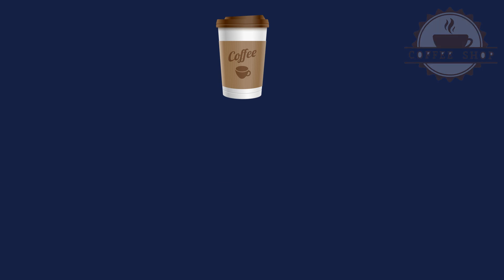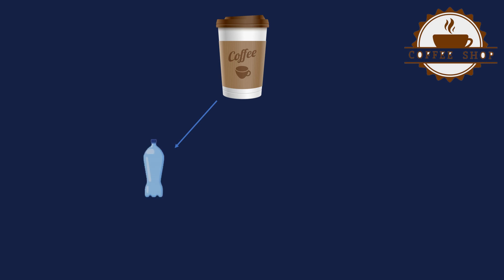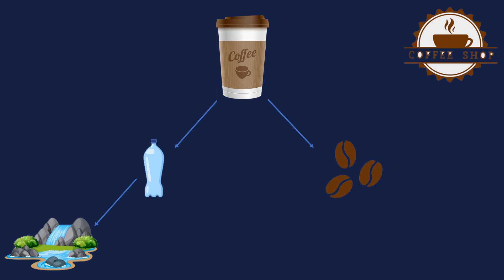Inside the coffee shop, the coffee cup depends on the water received from the river and the beans received from the coffee plant. But as a customer these are not your responsibility — you don't need to know the source of the water or the source of the beans.